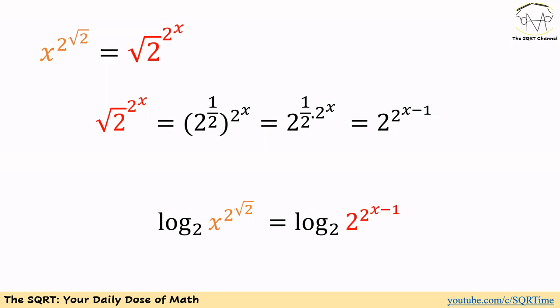We are going to simplify the right-hand side first. On the right-hand side we have square root of 2 to the power of 2 to the power of x. We write square root of 2 as 2 to the power of 1/2, and then raise that to the power of 2 to the power of x, giving us 2 to the power of (1/2) times 2 to the power of x, which simplifies to 2 to the power of 2 to the power of (x minus 1).